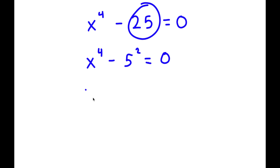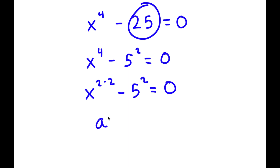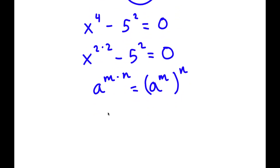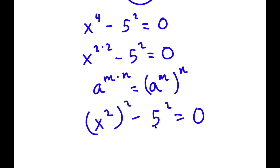Now x to the power of 4 is the same thing as x to the power of 2 times 2. If I have something in the form a to the power of m times n, this is equal to a to the power of m to the power of n. So x to the power of 2 times 2, I can write as x squared to the power of 2. Now I have this minus 5 squared is equal to 0.